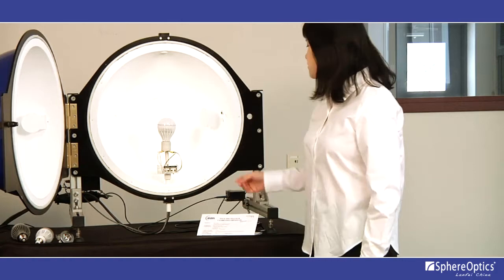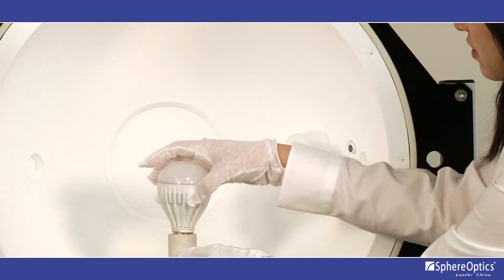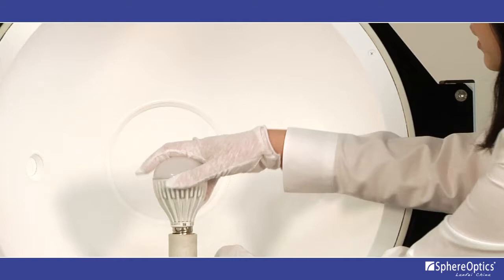Each system includes an integrating sphere in either half-meter or two-meter size, configured for both 2pi and 4pi measurement geometries. Choice of size depends on the application, with typical DUTs ranging in size from small LED chips to large street lights.